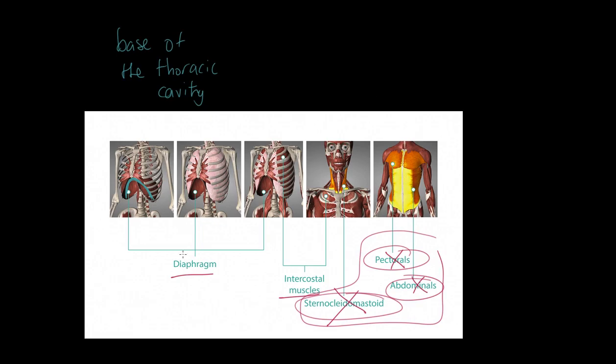When this diaphragm contracts, it flattens into this position. Imagine this muscle contracting and flattening. What this does to the thoracic cavity is it forces it out a little bit and also forces it up. So the diaphragm is involved in breathing in - inspiration or inhalation - and it does so by contracting.